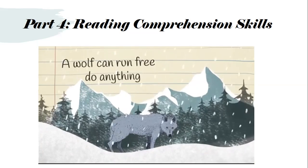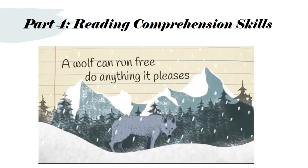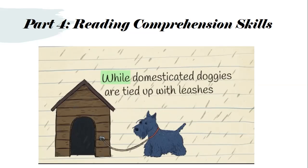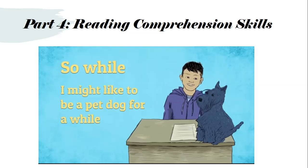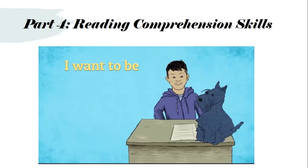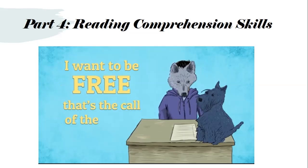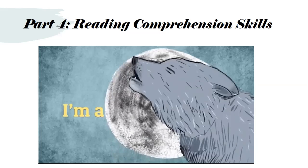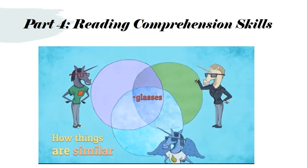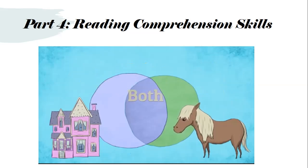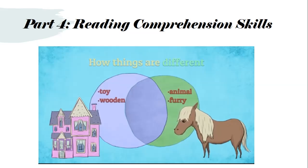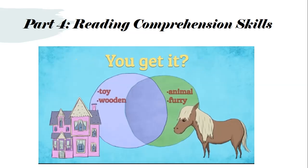A wolf can run free and do anything it pleases, while domesticated dogs are tied up with leashes. So while I might like to be a pet dog for a while, I want to be free — that's the call of the wild. I compare when I say how things are similar. I contrast when I say how things are different — give examples and get specific.